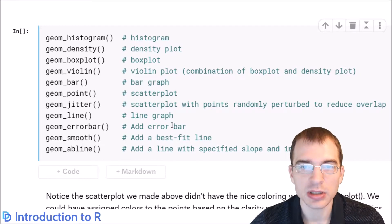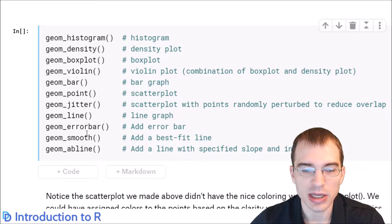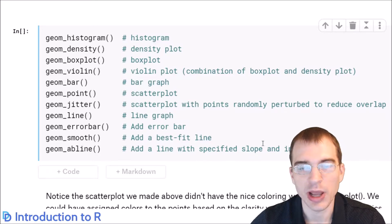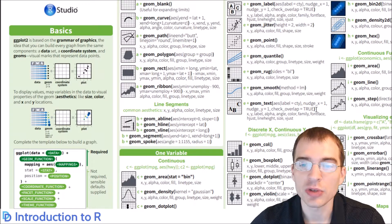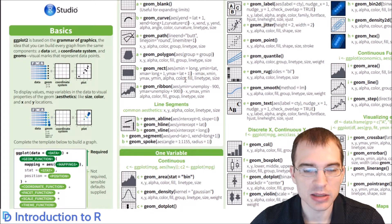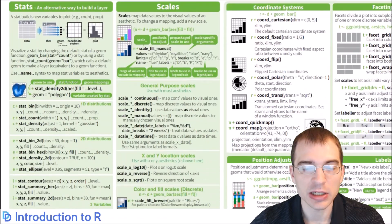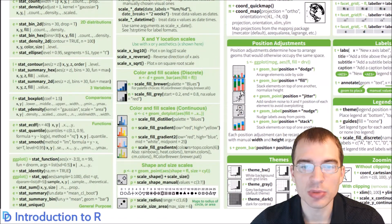There is actually a pretty nice ggplot2 cheat sheet that lists a lot of these as well as other parameters you can pass in. This is a quick look at the cheat sheet made by RStudio for ggplot2. I will provide a link to this cheat sheet in the description below.